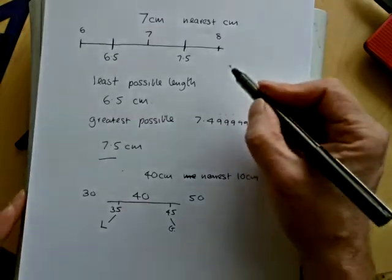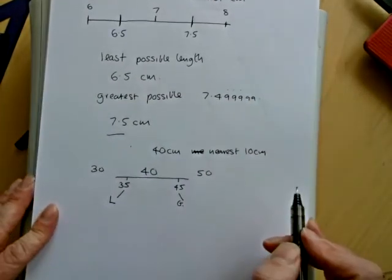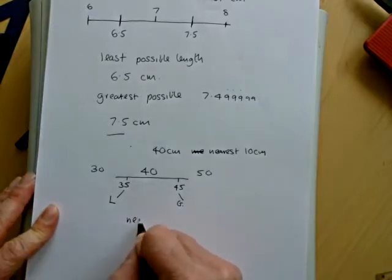More than likely, we'll get a question, unlike the top one. There has been the odd one further up the GCSE higher paper, which might say something like this to the nearest 5.